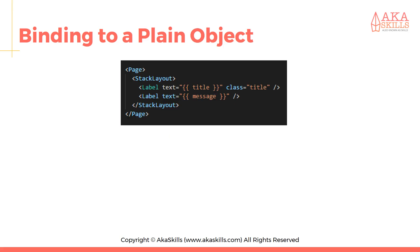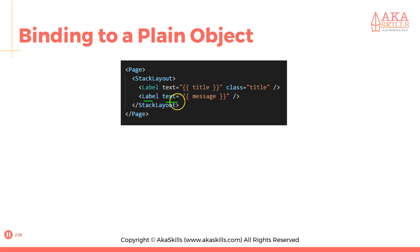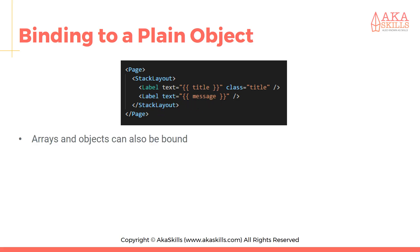We can also bind to plain objects. Here we have two labels. The text of one label will equal whatever value the backend has set — whatever it's bound to. Or we can have a label whose text is bound to 'message', which is another variable.